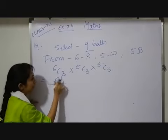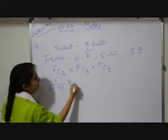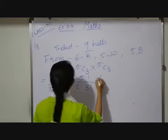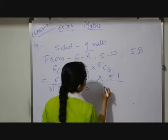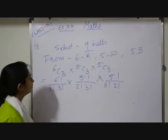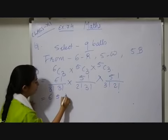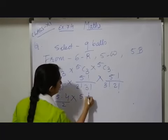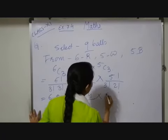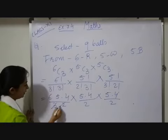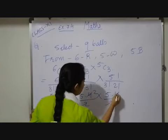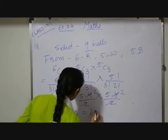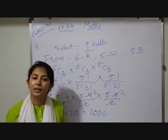Applying the formula: 6! / (3! × 3!) × 5! / (2! × 3!) × 5! / (2! × 3!). Opening it: (6 × 5 × 4 × 3!) / (3! × 6) × (5 × 4 × 3!) / (3! × 2) × (5 × 4 × 3!) / (3! × 2). After cancelling the 3! terms: (6×5×4)/6 × (5×4)/2 × (5×4)/2 = 20 × 10 × 10 = 2000 ways. Hope these questions are understood.